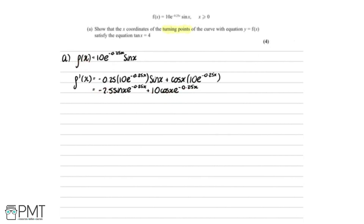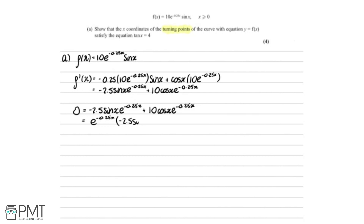To find the turning points, we set f'(x) equal to 0. Something that jumps out is that we can factorise out e^(−0.25x), because we've got that in both terms. Doing that, we get e^(−0.25x) multiplied by (−2.5 sin(x) + 10 cos(x)) = 0. So either e^(−0.25x) = 0, or −2.5 sin(x) + 10 cos(x) = 0.